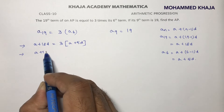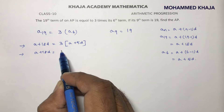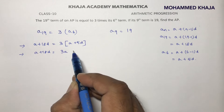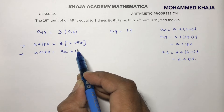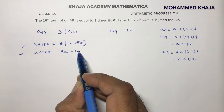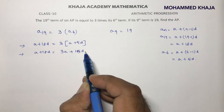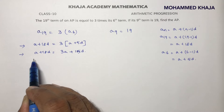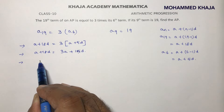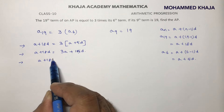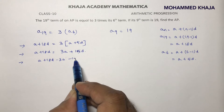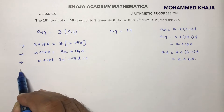Now, A plus 18D equals 3 times A, which gives 3A plus 3 times 5 is 15D. So now if we simplify further.